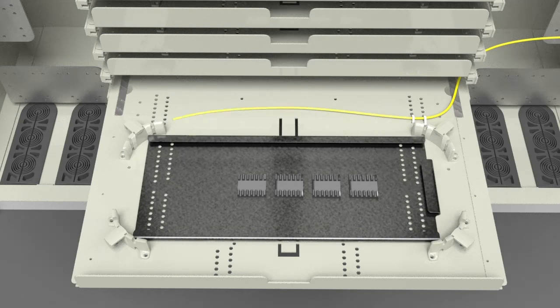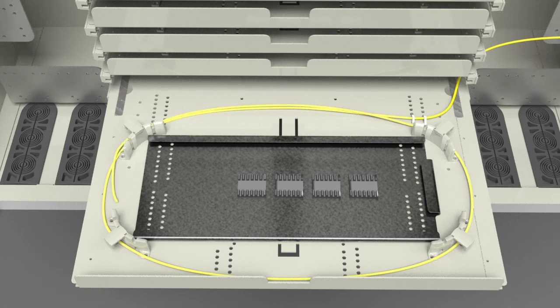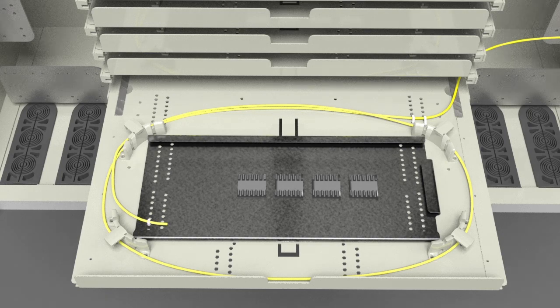Route the IFC subunit counterclockwise around the radius limiters and enter the splice tray at the left side bottom. Secure the subunit to the tray.